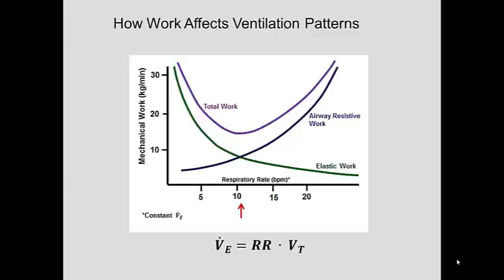The question was posed: why is it that we tend to ventilate at a particular respiratory rate with a particular tidal volume? Why not double the respiratory rate or triple the respiratory rate? Ultimately, the answer has to do with how much work it takes to ventilate. We tend to ventilate at a rhythm that will minimize the total amount of work needed to move air back and forth.